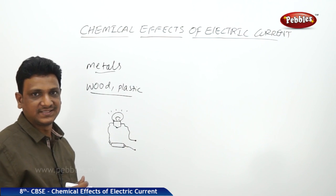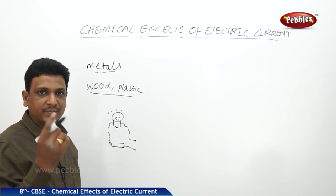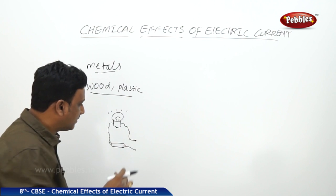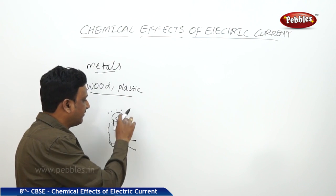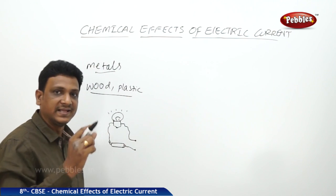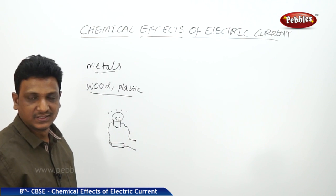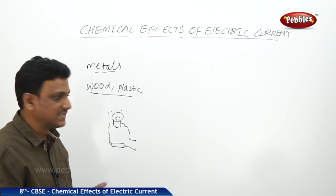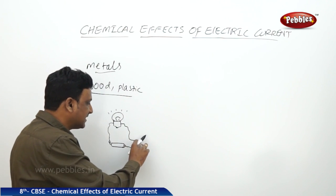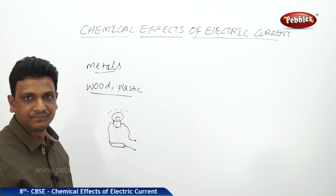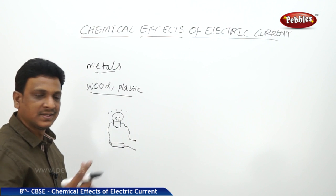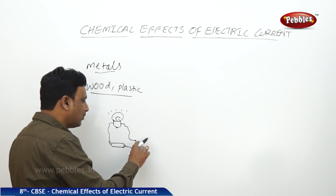This is one free end of the electric bulb and this is one end of the battery. If you place any object between these two points — if the object is a conductor, the circuit is completed and the bulb glows. If the object is not a conductor, the bulb doesn't glow. You can bring a nail, place it connecting the two ends — if the bulb glows, the nail is a conductor. Bring a pencil, put the pencil here — the bulb doesn't glow, so pencil is not a conductor.